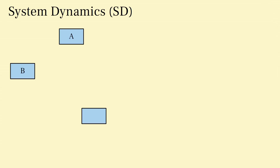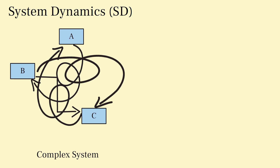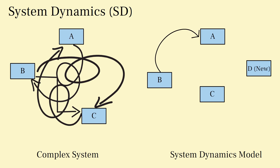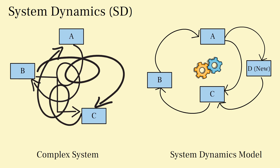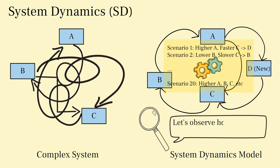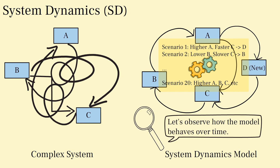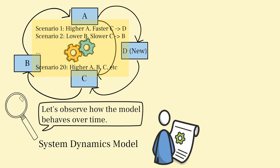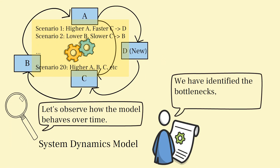Now, let's move on to system dynamics. This technique focuses on understanding and modeling the dynamic behavior of complex systems, taking into account feedback loops, delays, and interdependencies among different project variables. Using a visual modeling approach, we create a dynamic simulation model that represents the project system. By adjusting different parameters, we can simulate various scenarios and observe how changes in one variable affect the overall system over time. System dynamics helps us identify potential bottlenecks, delays, or unintended consequences within the project system.